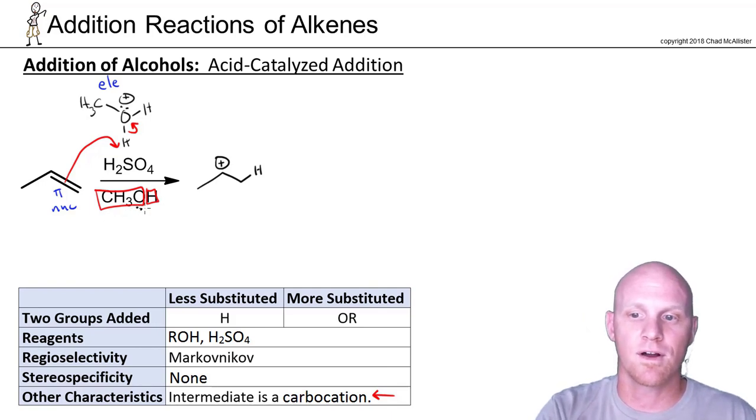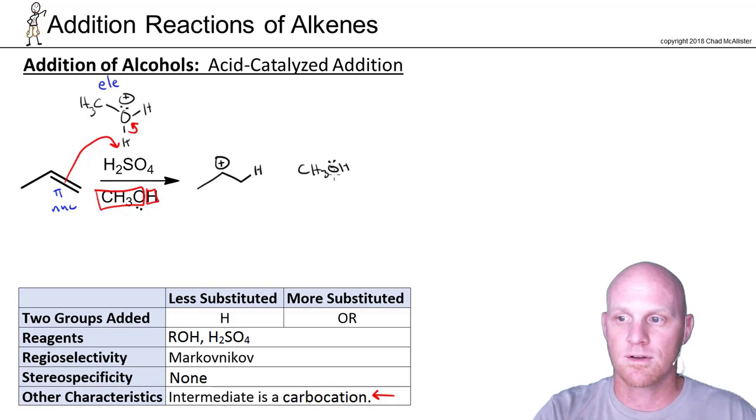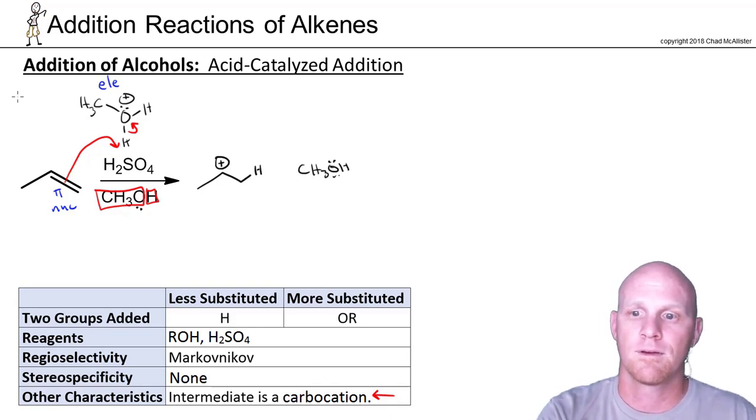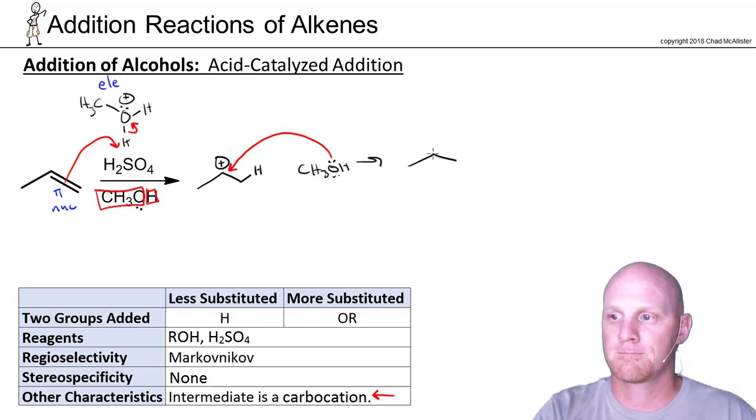And then our alcohol is going to come back and in this case attack our carbocation. But why don't we just draw another one since we formed another molecule of our alcohol. And again we'll come and attack our carbocation. And when it attacks the H and the CH3 are both still bonded there.